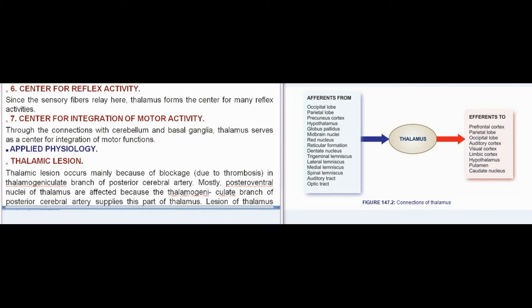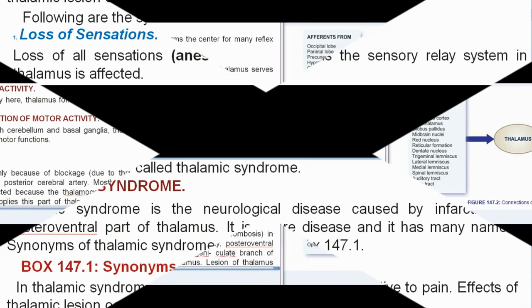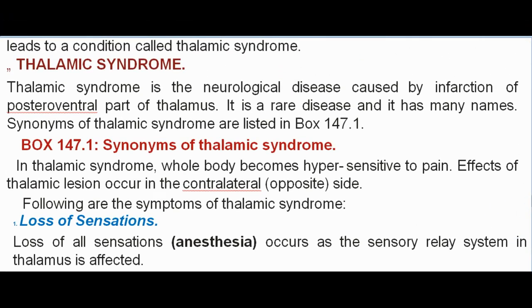Applied physiology — thalamic lesion: thalamic lesion occurs mainly because of blockage due to thrombosis in the thalamogeniculate branch of the posterior cerebral artery. Mostly, posteroventral nuclei of thalamus are affected because the thalamogeniculate branch supplies this part of thalamus. Lesion of thalamus leads to a condition called thalamic syndrome, which is a neurological disease caused by infarction of the posteroventral part of thalamus. It is a rare disease with many synonyms, listed in box 147.1.